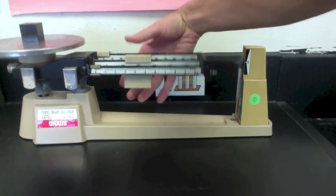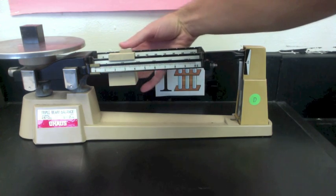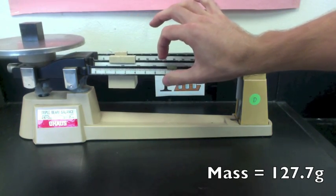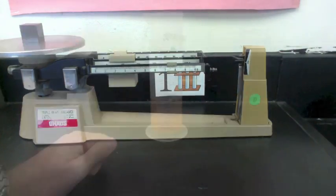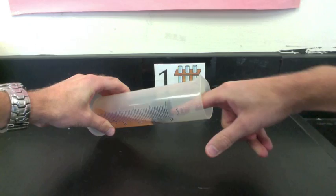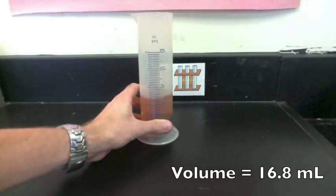Suppose we use a triple beam balance and find the mass of this object to be 127.7 grams. Then we use a graduated cylinder and determine the volume to be 16.8 milliliters.